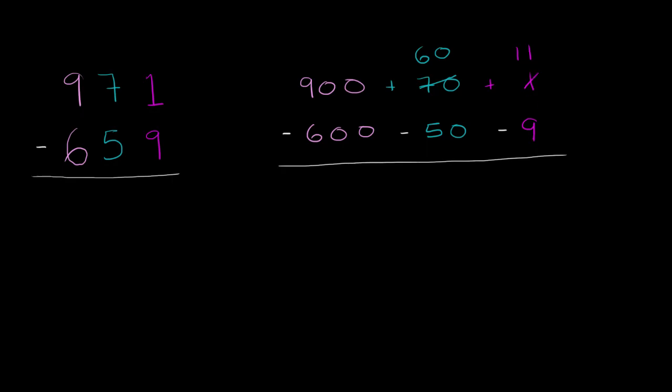11 minus 9 is 2. 60 minus 50 is 10. And 900 minus 600 is 300. So this subtraction should result in 300 plus 10 plus 2, which is 312.